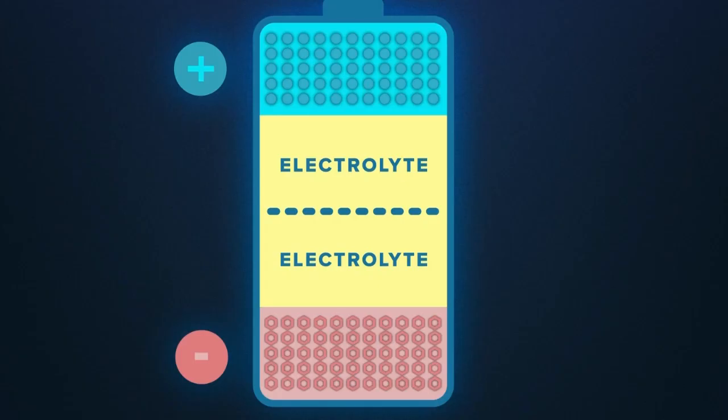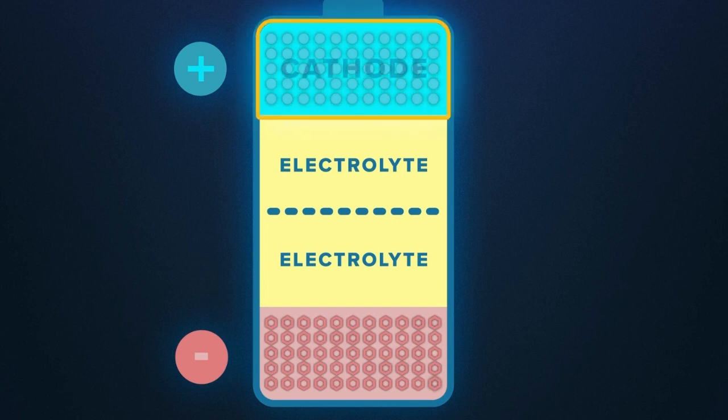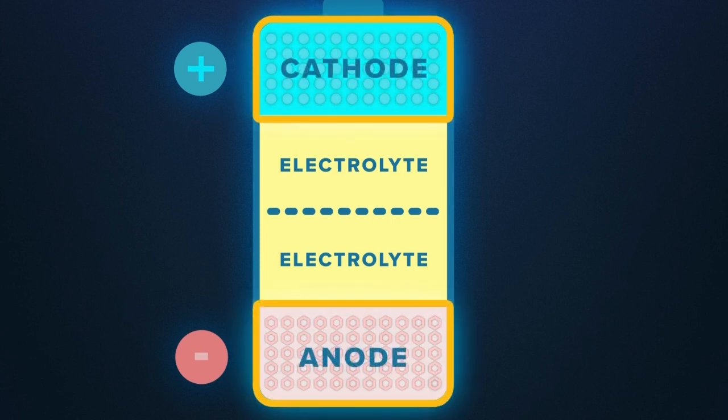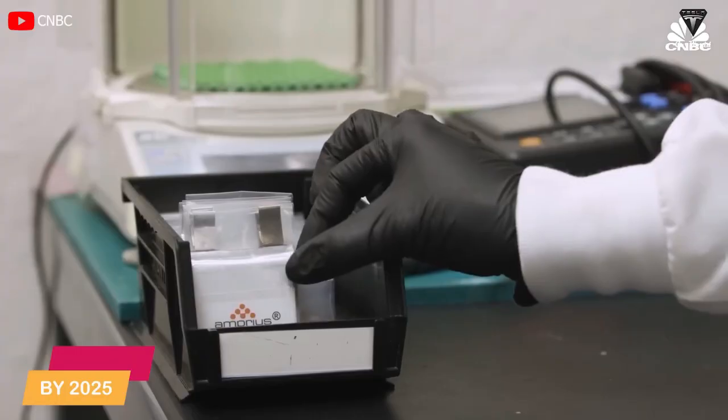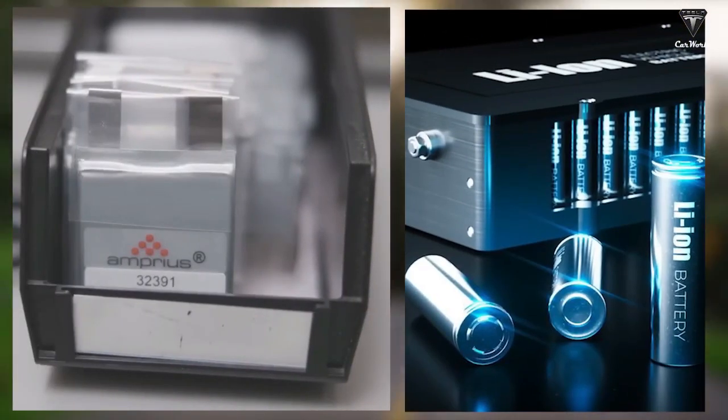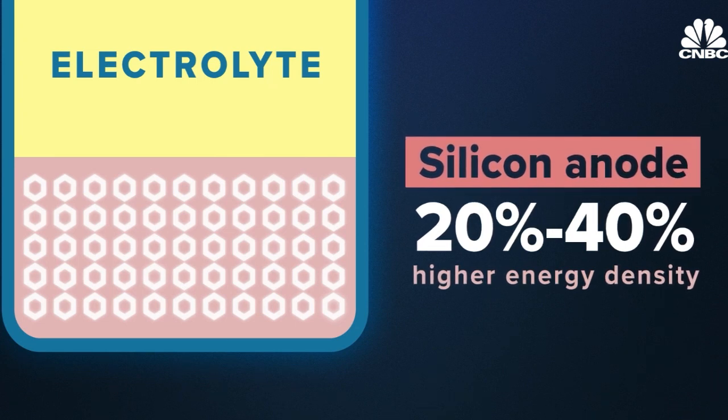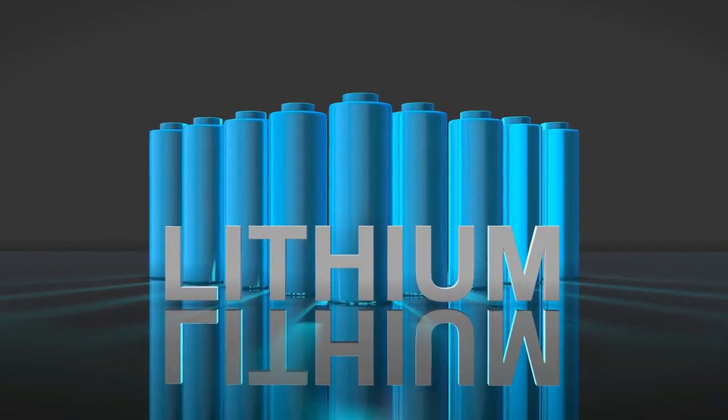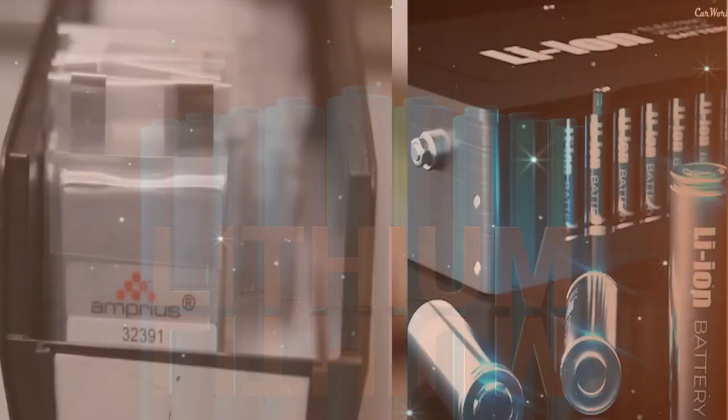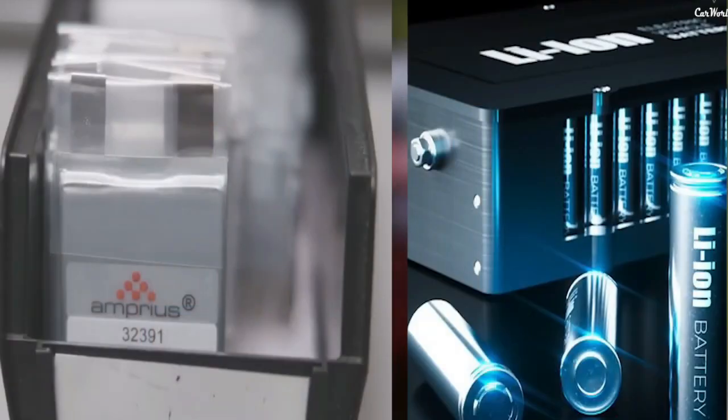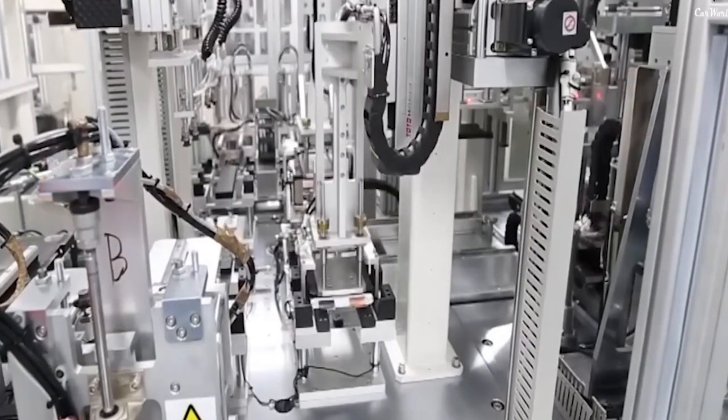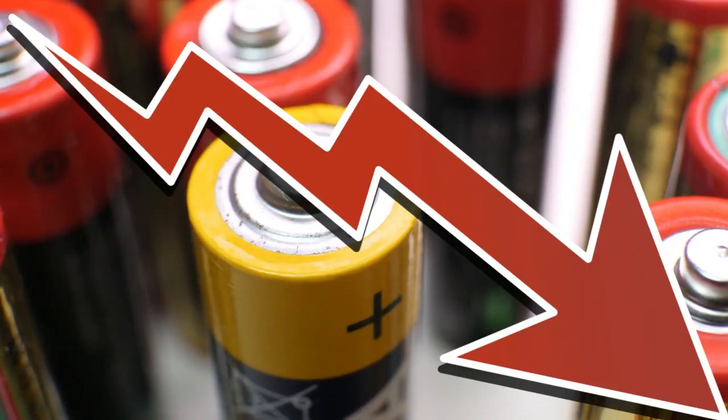One of the most exciting aspects of the silicon-anode battery revolution lies in its cost efficiency. By 2025, experts predict that the production cost of silicon-anode batteries will drop to less than $100 per kilowatt-hour. Compare this to the current cost of lithium batteries, which stands at around $134 per kilowatt-hour. The significance of this cost reduction cannot be overstated.